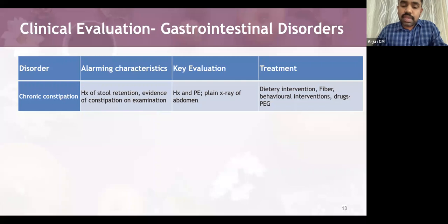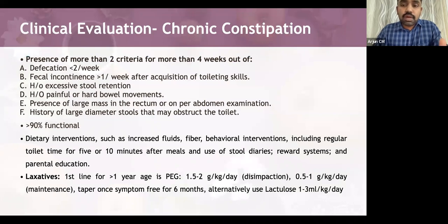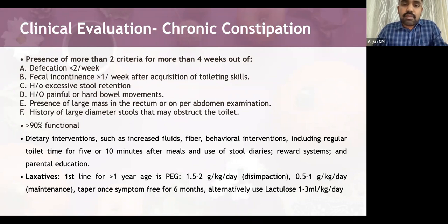In clinical evaluation, consider organic pathology affecting the GI system, biliary system, gallbladder, pancreas, genitourinary system, and miscellaneous conditions. The commonest GI disorder with organic etiology is chronic constipation. Constipation is defined as two or more of these six criteria for more than four weeks: defecation ≤2 per week; fecal incontinence more than once per week after acquisition of toileting skills; history of excessive stool retention; history of painful or hard bowel movements; large rectal mass on examination; or history of large diameter stools. More than 90% of chronic constipation is functional.